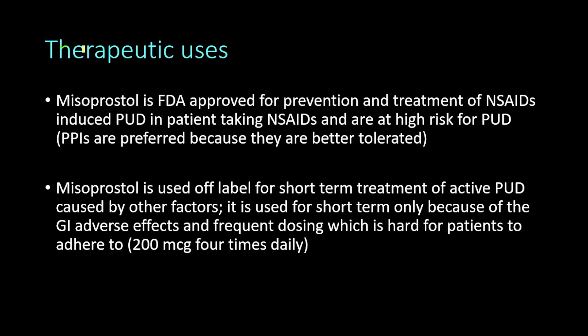Regarding therapeutic uses, misoprostol is FDA approved for prevention and treatment of NSAID-induced peptic ulcer disease in patients taking NSAIDs who are at high risk of developing peptic ulcer disease. However, proton pump inhibitors are preferred because they are better tolerated — misoprostol is associated with annoying abdominal cramping and diarrhea that are hard to deal with.